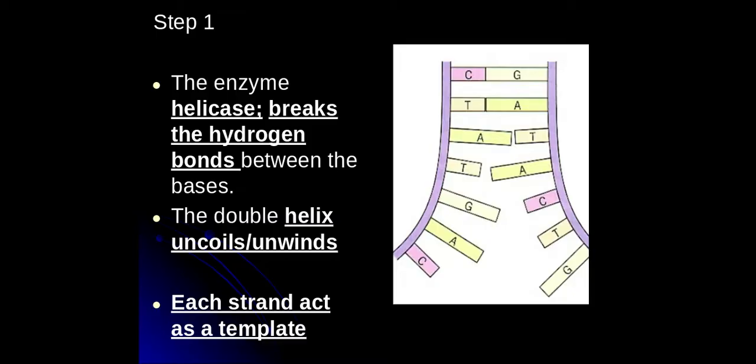Because of the DNA helicase breaking those hydrogen bonds between the bases - there's three hydrogen bonds between G and C and two between A and T - when those bonds break, I'm unwinding or uncoiling that double helix and each strand of DNA is going to act as a template.